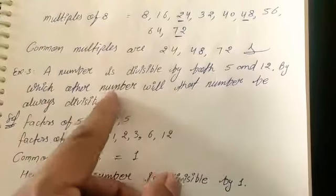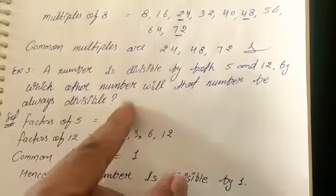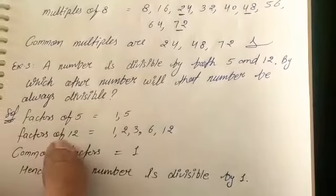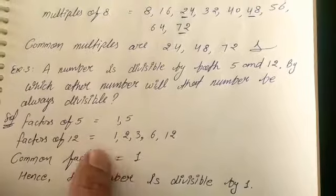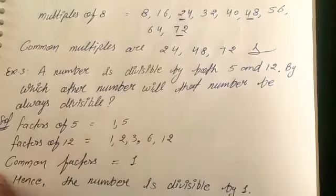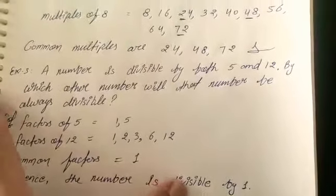So students, we will write the factors of 5 and 12, and 1 is common. So the common factor is 1. Hence, the number is divisible by 1.